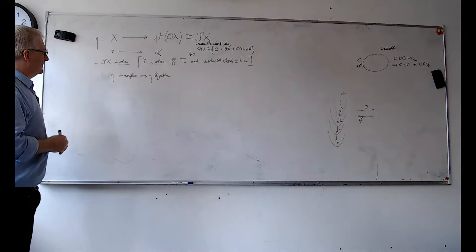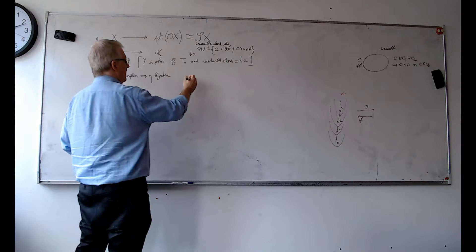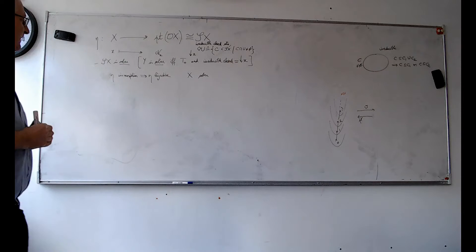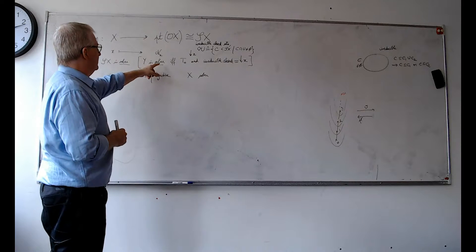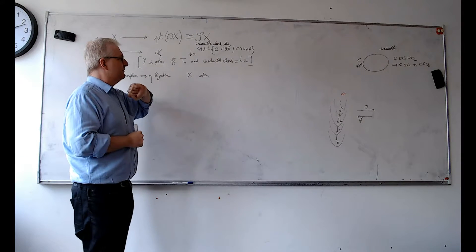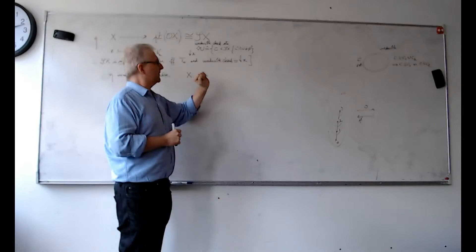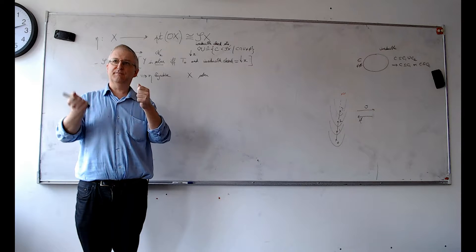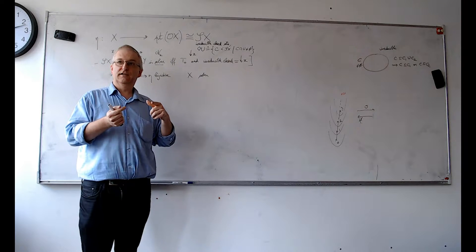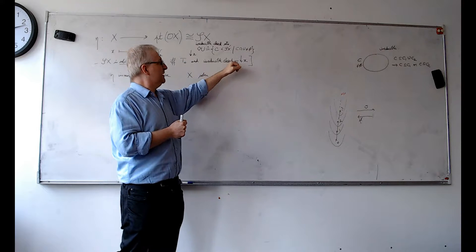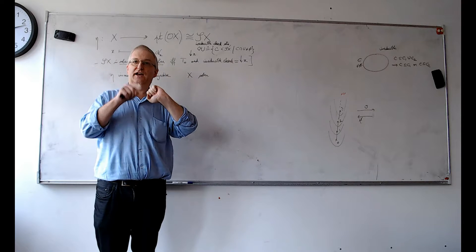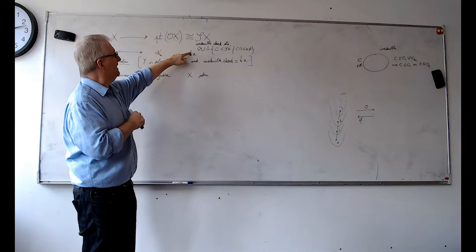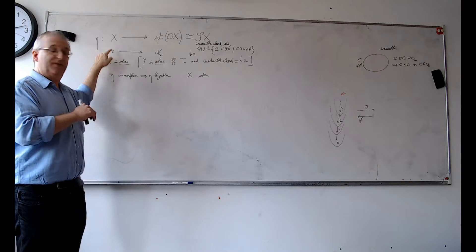We want to show that η is an isomorphism, η is bijective, and X is sober are all equivalent. Isomorphism implies bijective is obvious. Sober means T0 and every irreducible closed set has the form down-arrow-X. Under T0, if an irreducible closed set can be written as down-arrow-X and also as down-arrow-Y, then X = Y, so every irreducible closed set is writable in a unique way as down-arrow-X. That means every element of S(X) is exactly η of a unique element, meaning η is bijective. So these two conditions are equivalent.